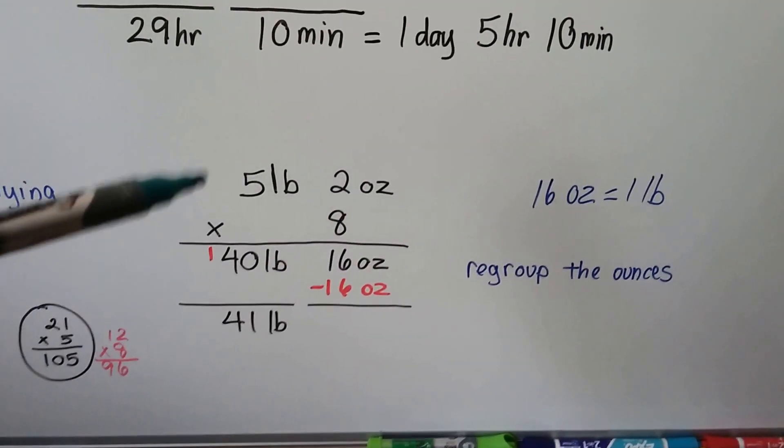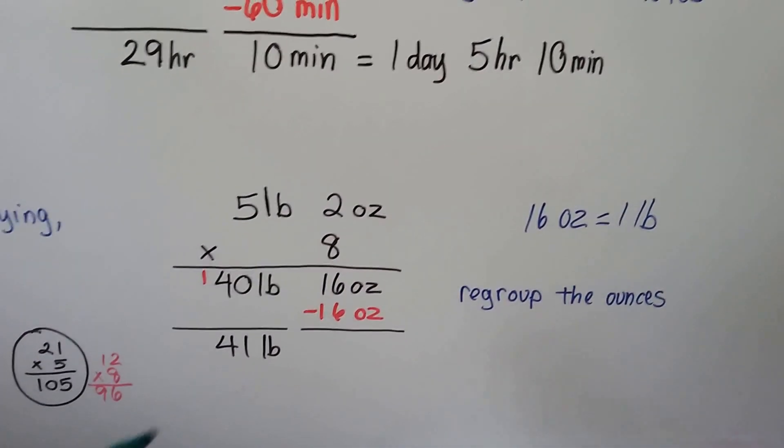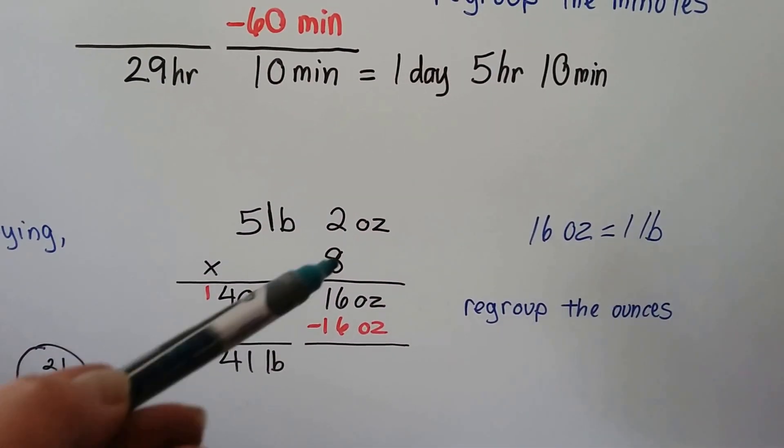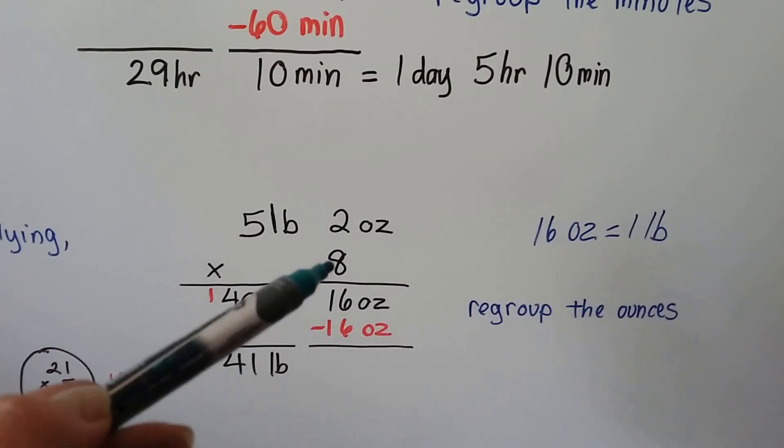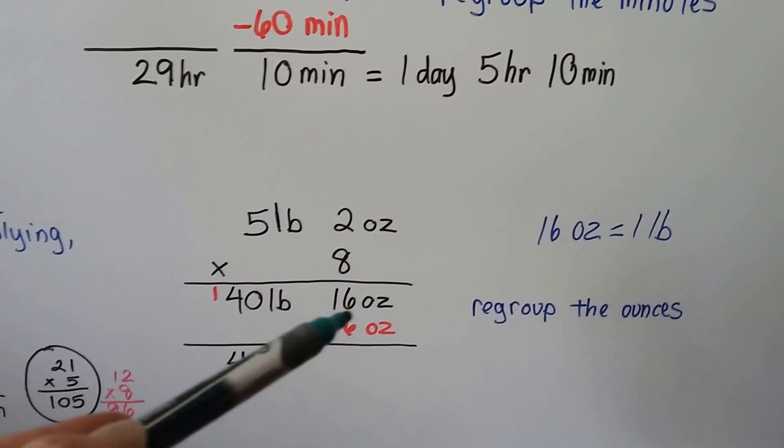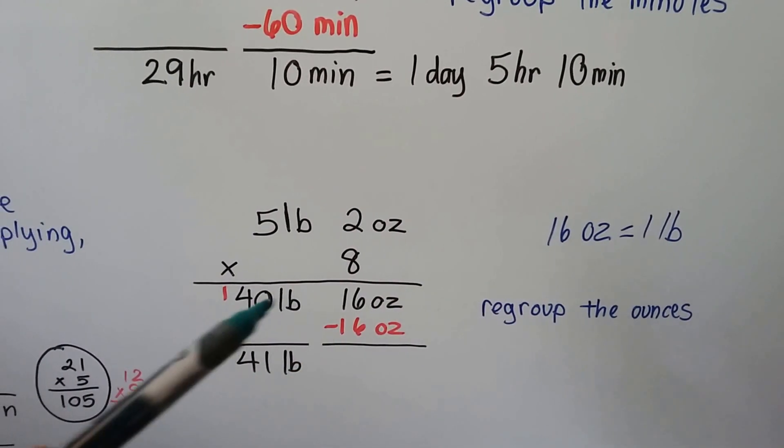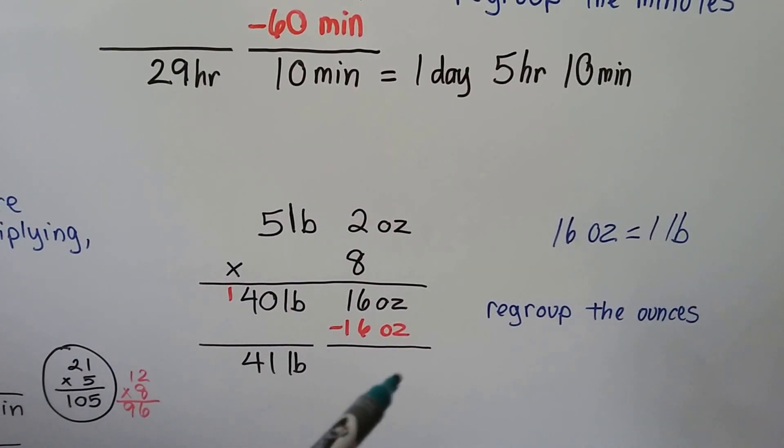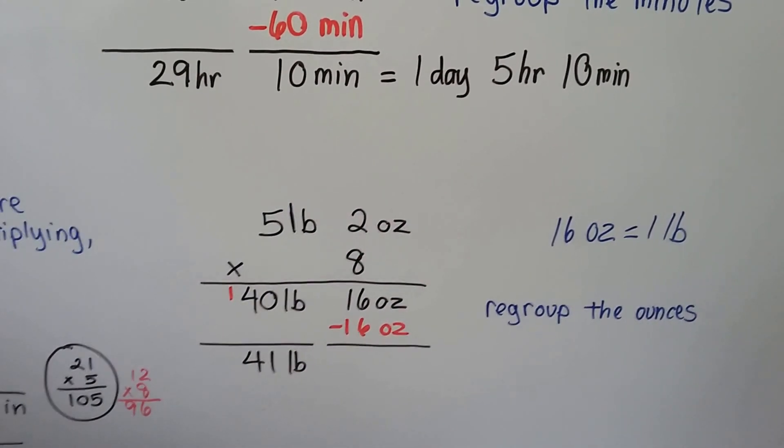Let's try it with ounces. We have 5 pounds, 2 ounces. We need to multiply it by 8. We're not going to regroup until the end. 8 times 2 is 16 ounces. 8 times 5 pounds is 40 pounds. That 16 ounces equals 1 pound. So we can just give it to the pound side. Now we have 0 ounces, but we have 41 pounds.